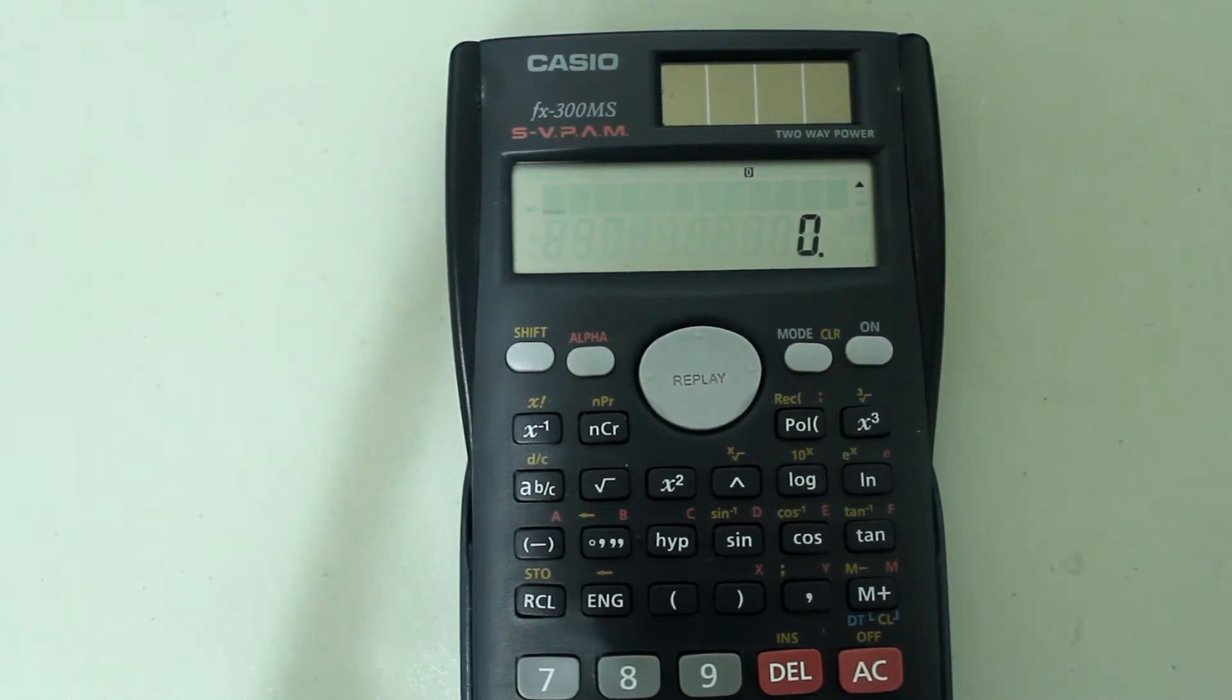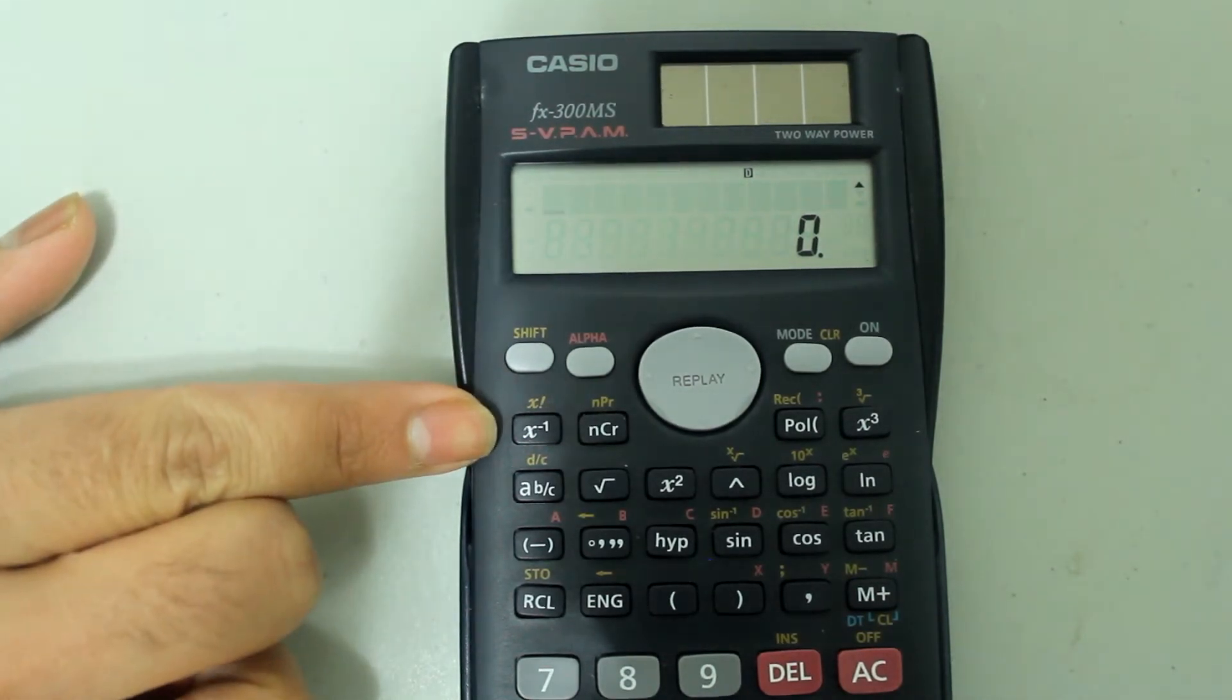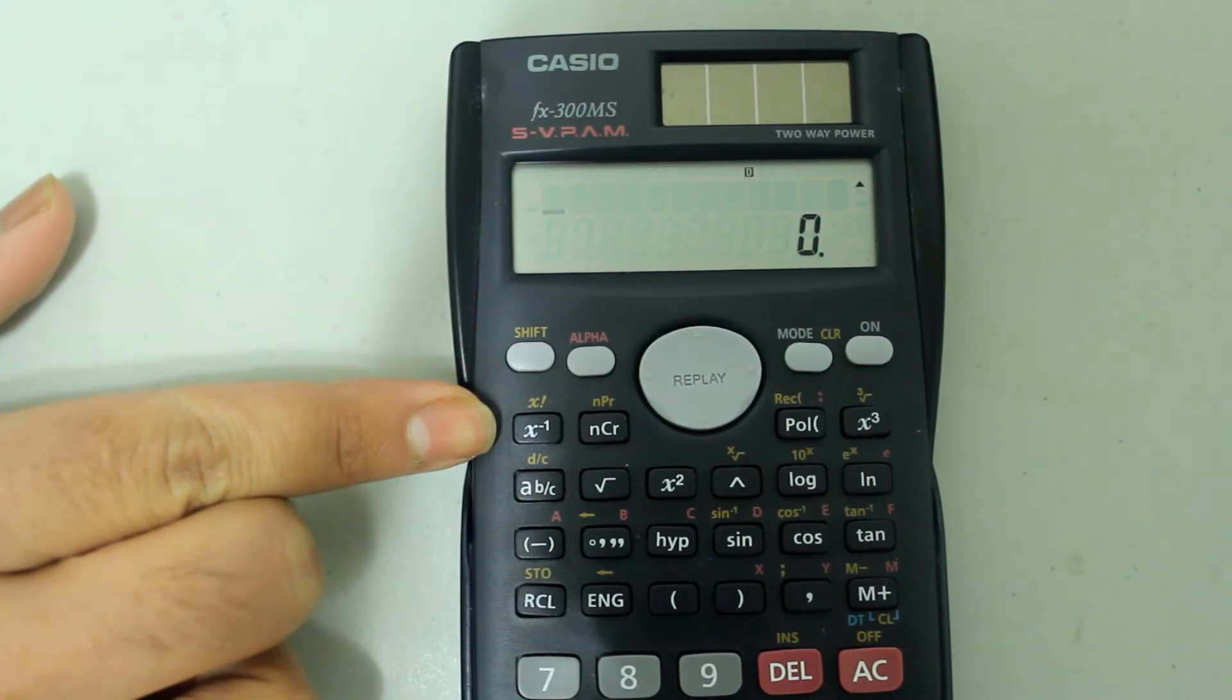The reciprocal of a number is just 1 over that number. If we wanted to find the reciprocal of a number using the Casio scientific calculator, we would need to use this button labeled x to the negative 1.